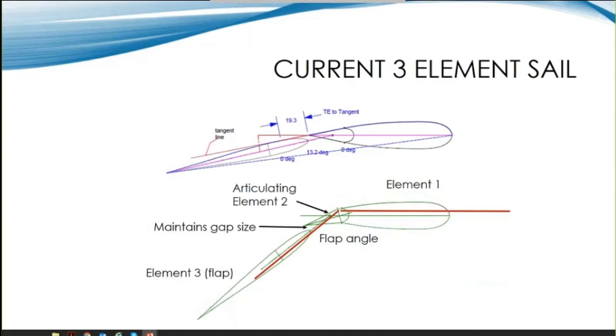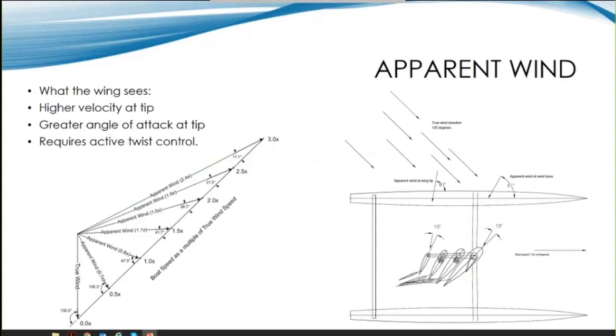Now the C-Class sail rig is really quite clever in its design. It's a three-element sail with the third element being the flap. The second element is a small section that pivots to create symmetry and maintain a constant gap between 13 degrees and the full flap angle of 36 degrees. This gap improves attached flow at these higher camber angles.